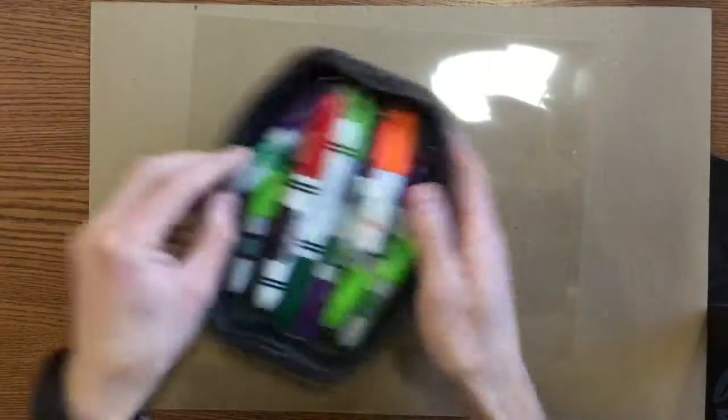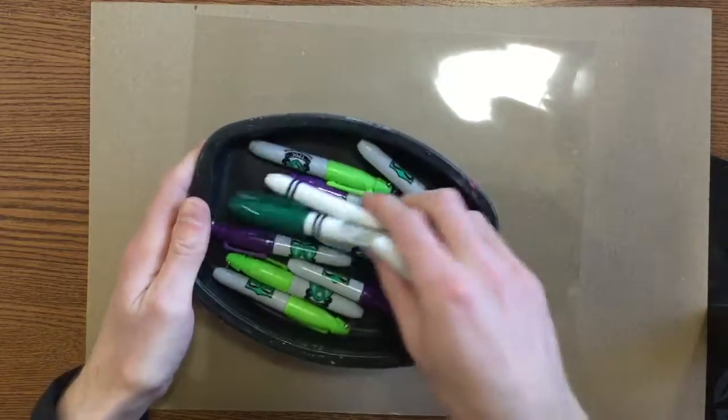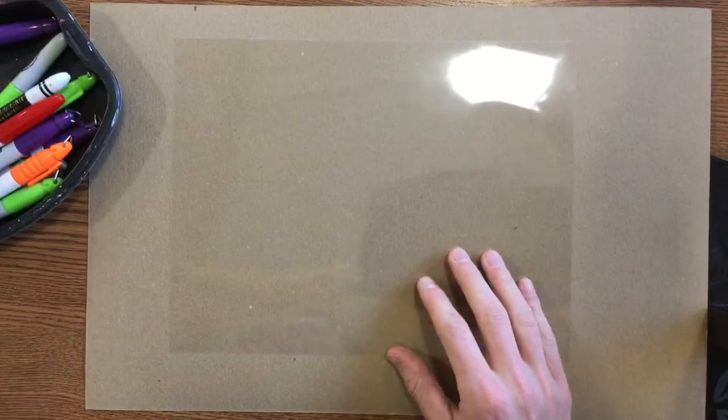At your table I have some different sharpies set out. You can see I don't have the whole rainbow. You're just going to have to work with what you've got. We are going to be adding some nice designs to this transparency.